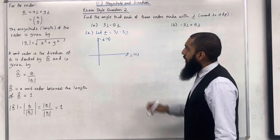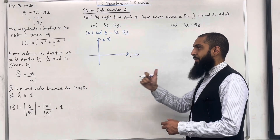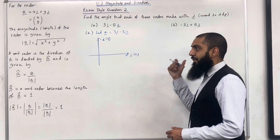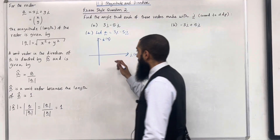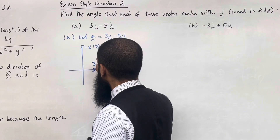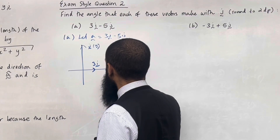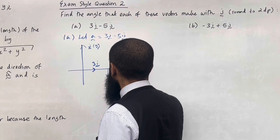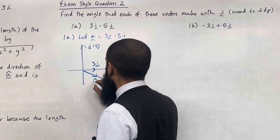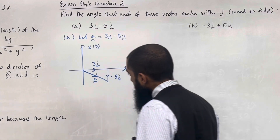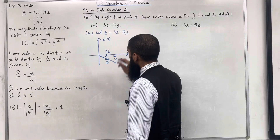The vector 3i − 5j is three steps to the right and five steps going down. Here is the resulting diagram showing vector A = 3i − 5j. This forms a right-angle triangle.